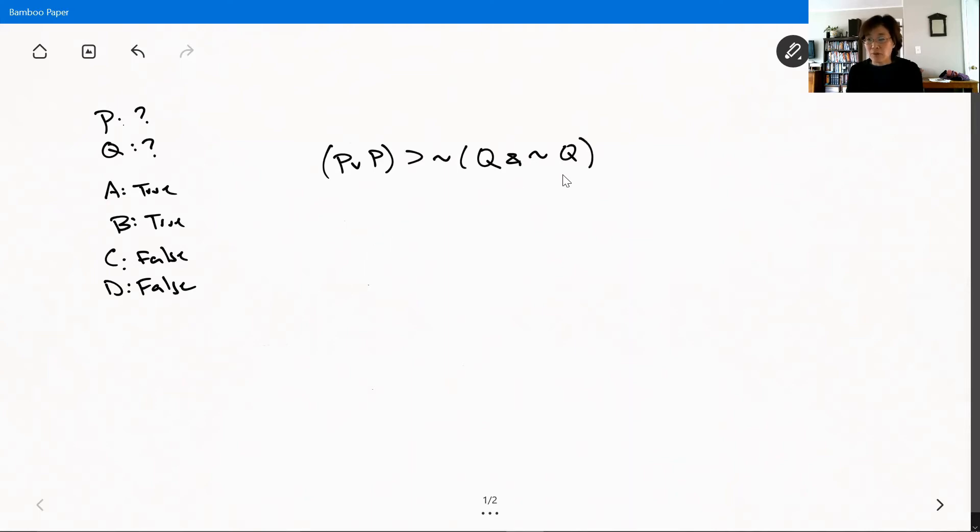Here, we can still figure out the truth value of this compound. We're out of luck with the antecedent. If P is true, then the antecedent is true. If P is false, then the antecedent is false, so that's going to remain unknown. But what about the consequent?